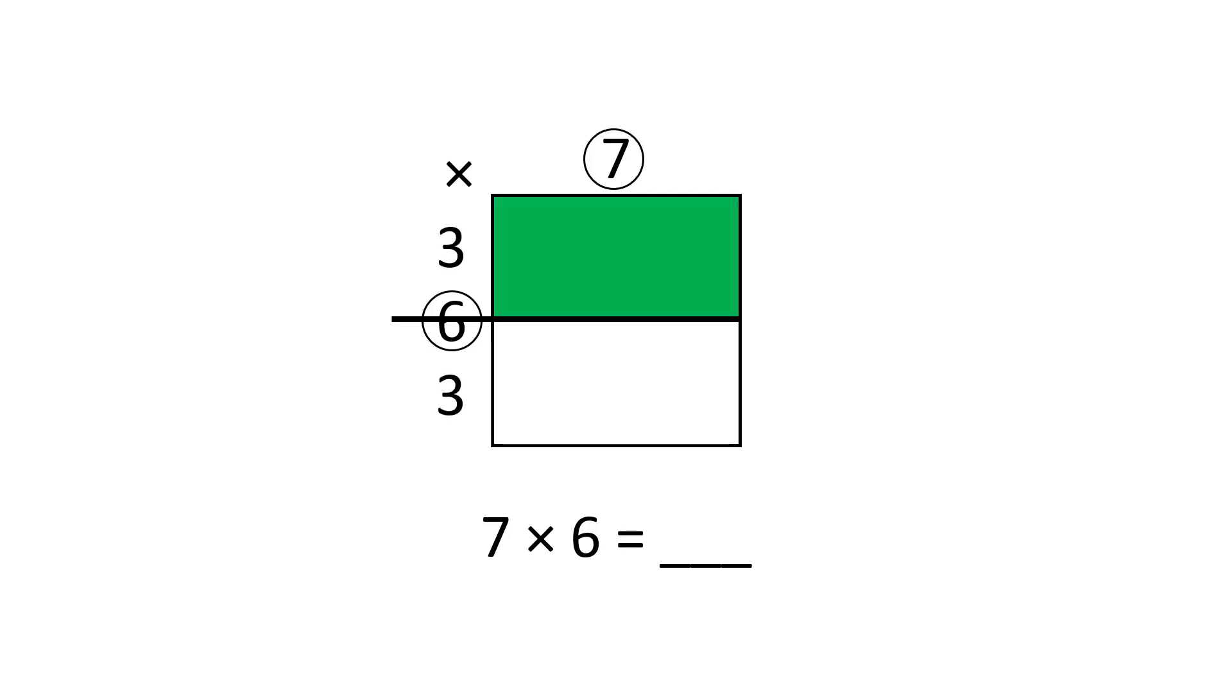7 times 3 is equal to 21, 7 times 3 is equal to 21, and altogether this is equal to 42.